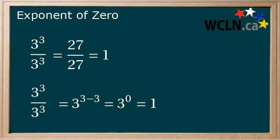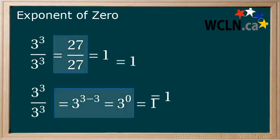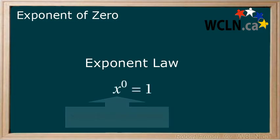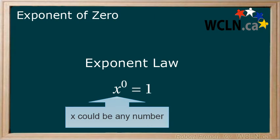Looking at these two examples, we see that while we worked through the problem differently each time, they both came to the same answer. This brings us to the following exponent law. x to the power of 0 equals 1. x is used to represent any number.